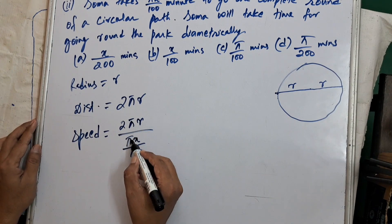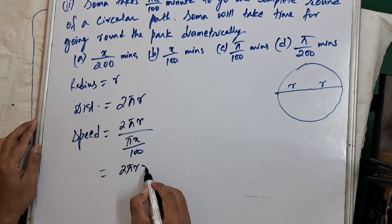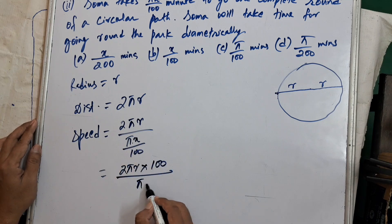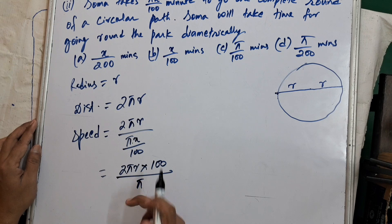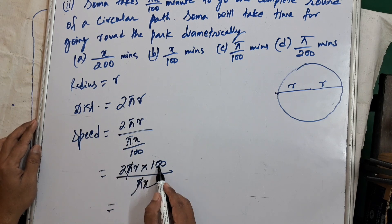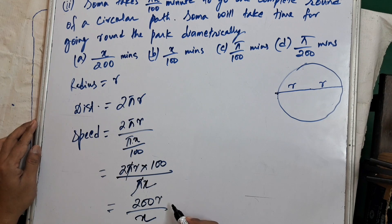Speed of Soma is 2πR ÷ (πX/100) = 2πR × (100/πX). The π terms cancel, giving 200R/X units per minute.